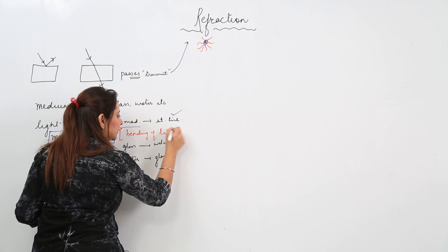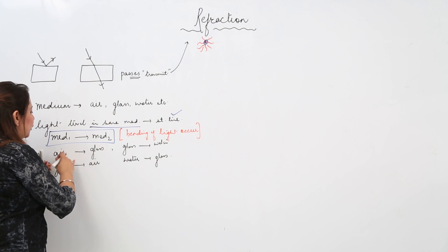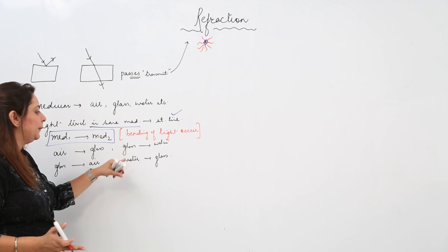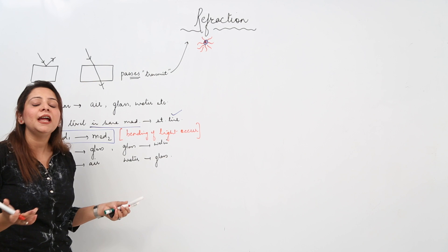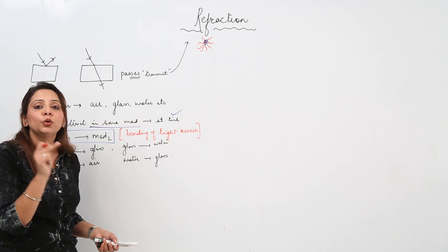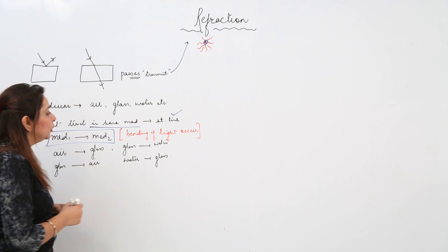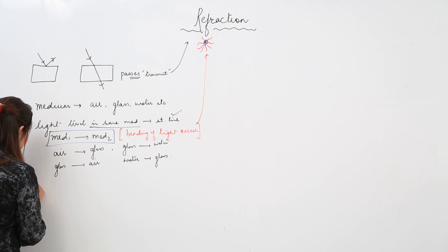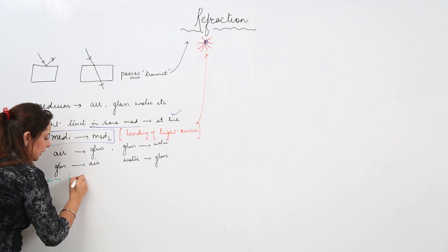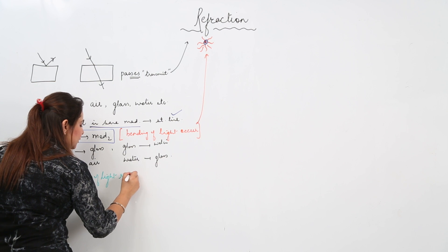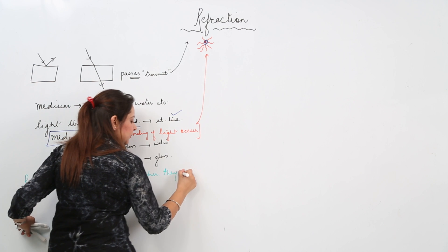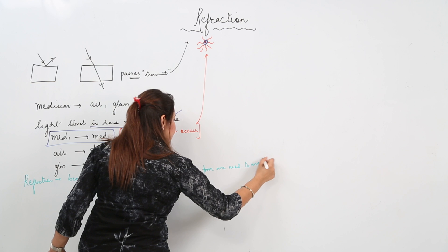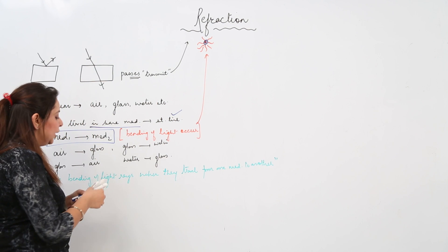Whether light passes from air to glass, glass to air, glass to water, or water to glass — in all cases, bending of light occurs. This bending of light is called refraction. So refraction is defined as the bending of light rays when they travel from one medium to another.